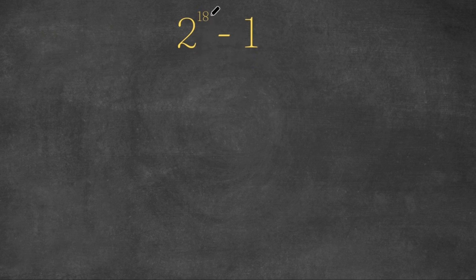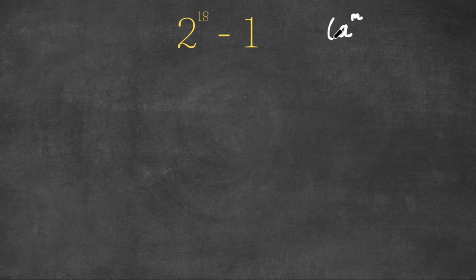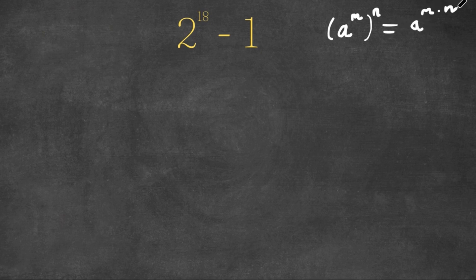So we have 2 to the power of 18 minus 1. Now if we have something in the form a to the power of m to the power of n, this is equal to a to the power of m times n. And the same thing goes vice versa — a to the power of m times n can be written as a to the power of m to the power of n.